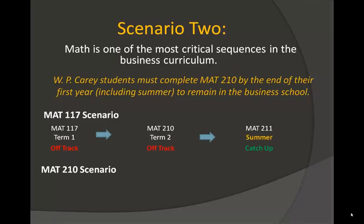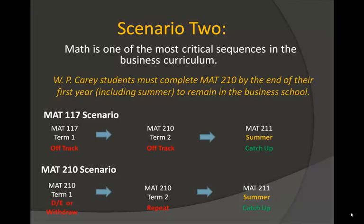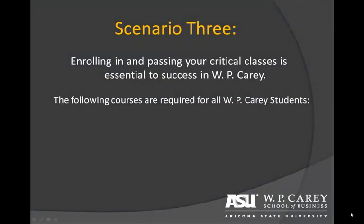Students that place into Math 210 but receive a grade of D or E, or need to withdraw in their first semester, should repeat this course in the immediately following semester in order to get back on track. These students will also have the option of taking Math 211 in summer in order to catch up. Passing your critically tracked courses with a grade of C or better is equally as important as taking them in the semester indicated on your major map.